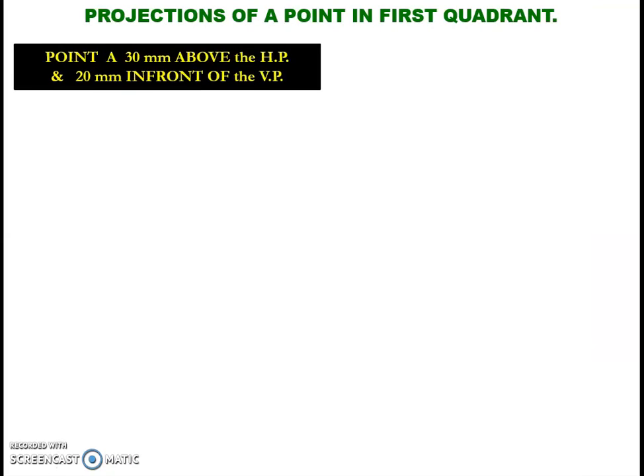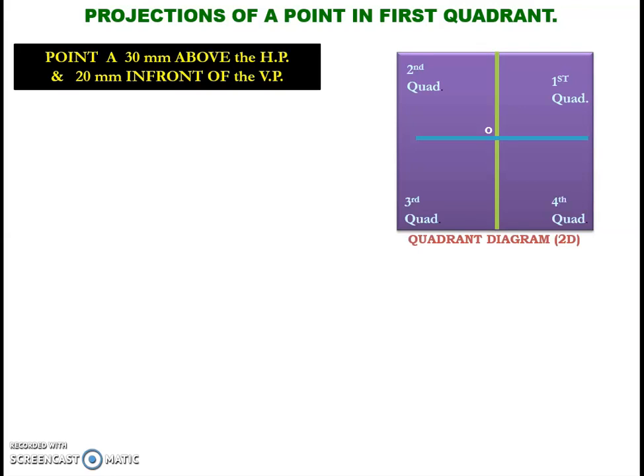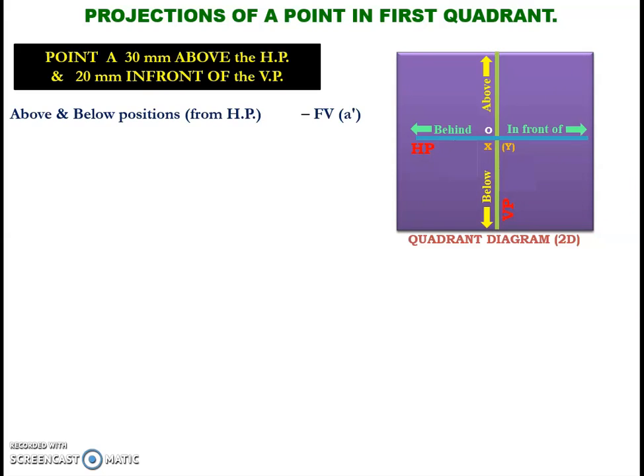Now, we can consider an example problem from first quadrant. So, we can see the quadrant diagram once again. As I have mentioned, we need a horizontal plane to represent the above and below positions. In the same way, we need a vertical plane to locate the behind and in front of positions. So, from the front view, we can see or we can visualize the above positions or below position and we can represent it as front view using small letter with dash.